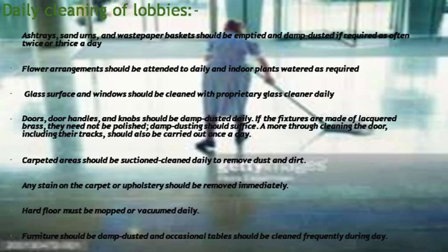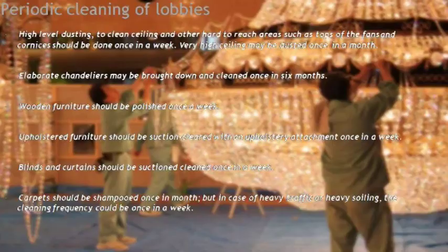Wooden furniture should be polished once a week. Upholstered furniture should be suction cleaned with an upholstery attachment once a week. Blinds and curtains should be suction cleaned once a week. The carpet should be shampooed once a month, but in case of heavy traffic or heavy soiling, the cleaning frequency could be once a week, or as per the hotel policy.